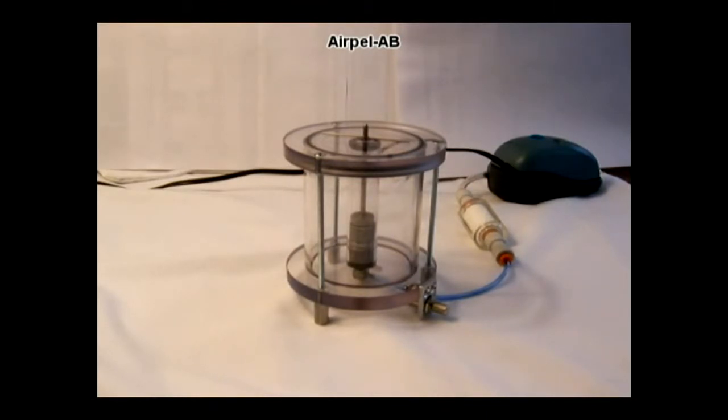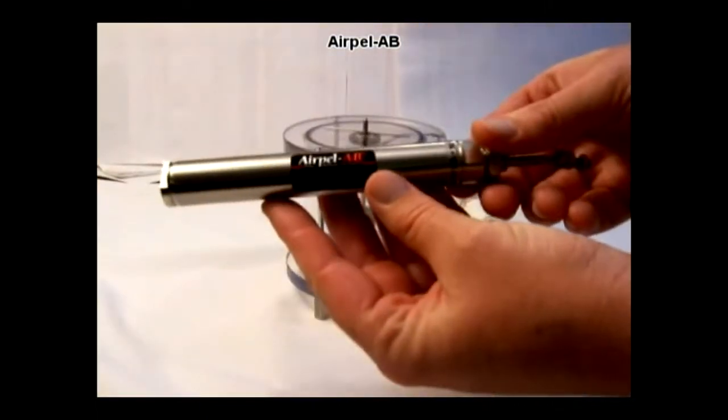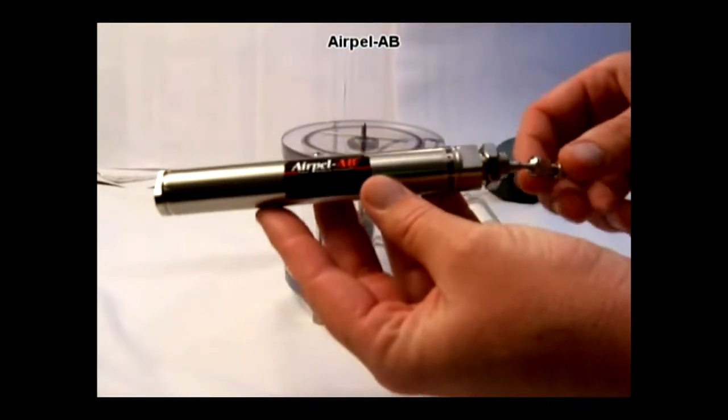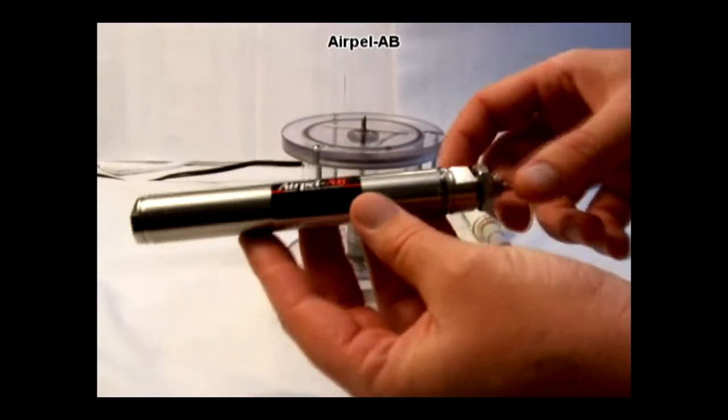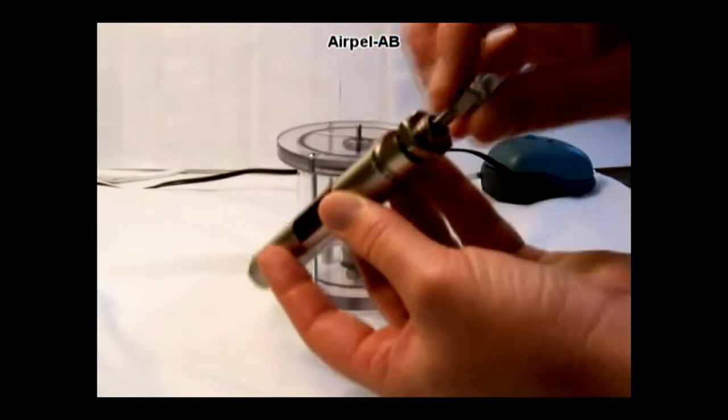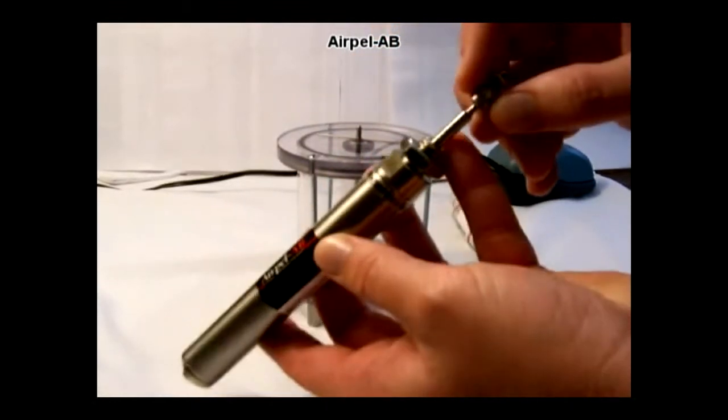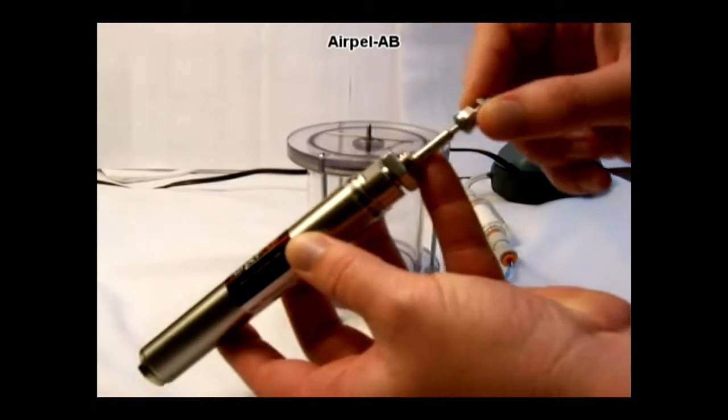The AirPel AB uses a frictionless piston inside of an air cylinder configuration and this is an example of a finished AirPel AB. This is a 16 millimeter bore, 80 millimeter stroke AirPel, and the rod comes out of the front nose with some clearance and there's also a ball and socket joint at the end of the rod.